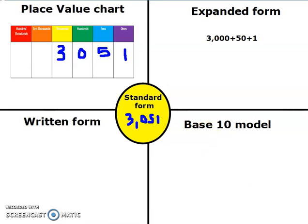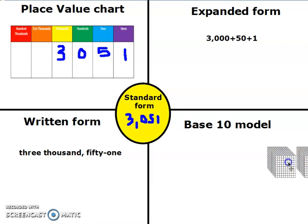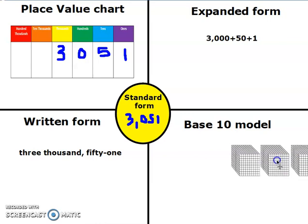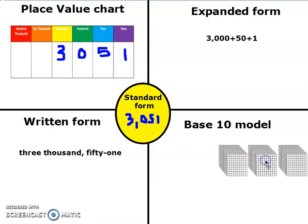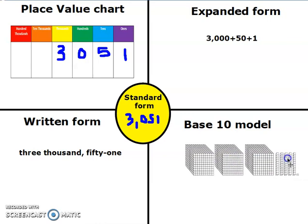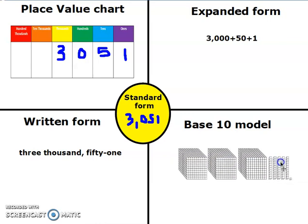So now my place value chart has told me that my standard form would be 3,051. And when I think about 3,051, I write it just like I say it. So for my base 10 model, that means I need 1,000 block, 2,000, 3,000. Then I need 5 tens and 1 one — 3,051. And that's my answer.